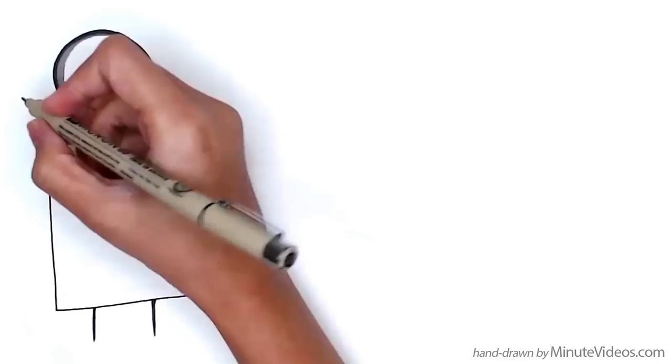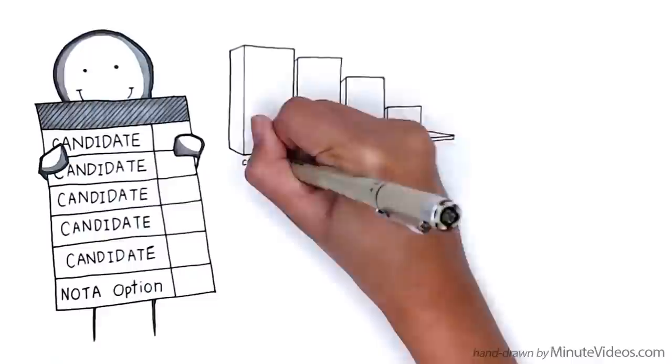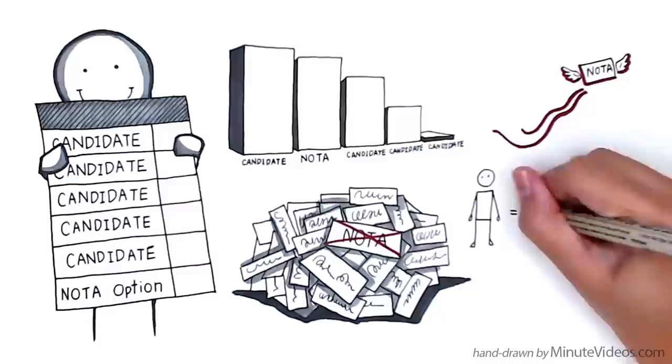The only way to formally withhold consent at an election is by having an official nota option on the ballot paper with formalized consequences for the result if the majority choose it. In other words, without nota, a truly representative democracy is not possible.